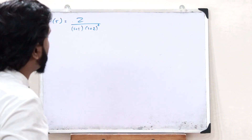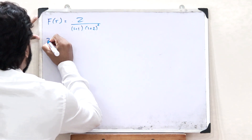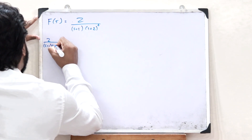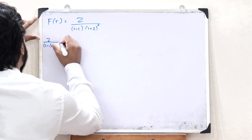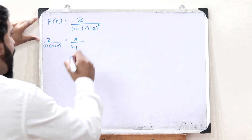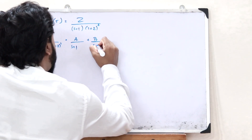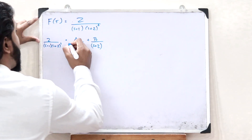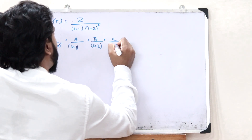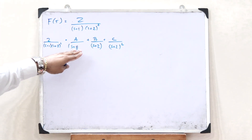When we split this using the principle of partial fractions, we write: 2 / [(s+1)(s+2)²] = A/(s+1) + B/(s+2) + C/(s+2)². This is how we split this particular function using partial fractions.